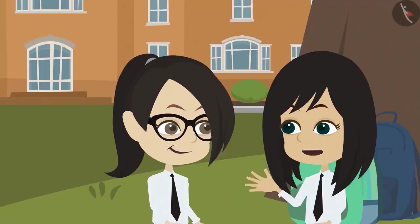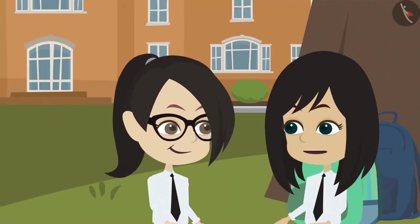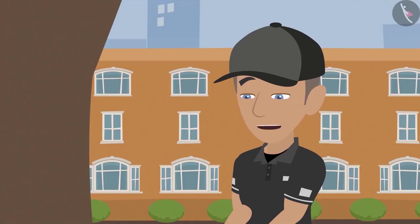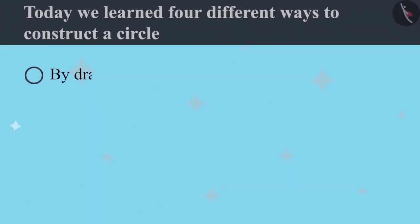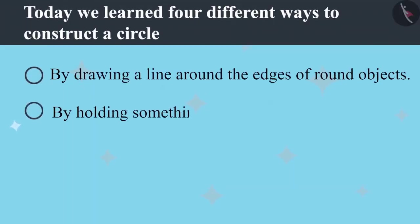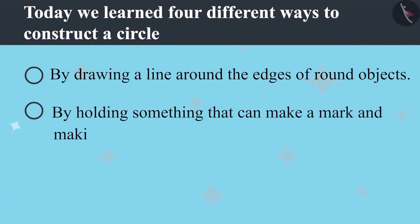Now we know four methods to draw a circle. Isn't it? Which four methods? I told only two. One is by tracing the edge of round objects. The second is by holding something that can make a mark and then making a line around you.